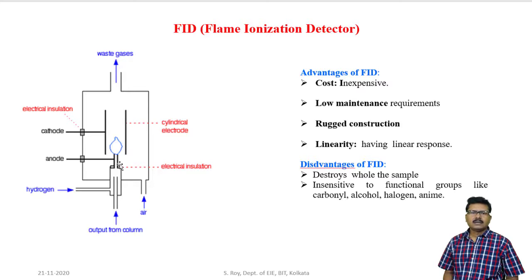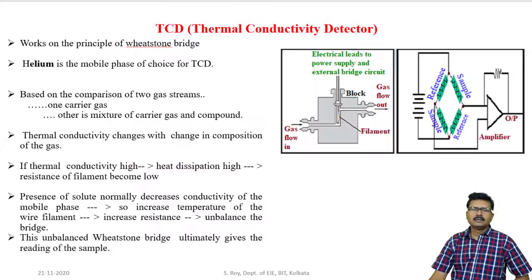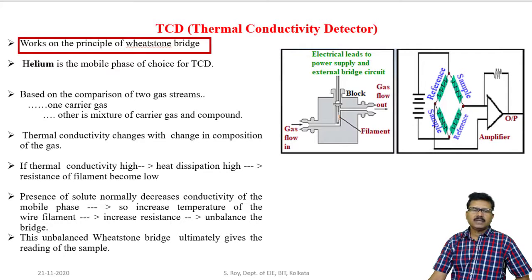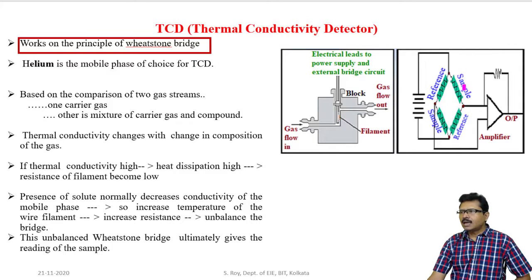Another disadvantage is that different functional groups like carbonyl, halogen, and amine cannot be detected by flame ionization detector. Now I am explaining thermal conductivity detector. Thermal conductivity detector is based on a Wheatstone bridge with four arms. Through two opposite arms reference gas is passed, and through the other two opposite arms reference gas with sample is passed. In this detector, normally helium gas is used as the mobile phase.